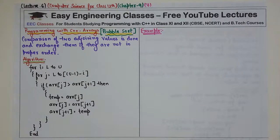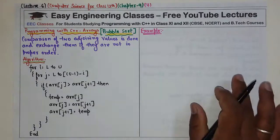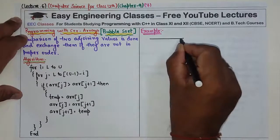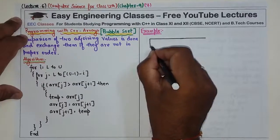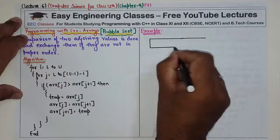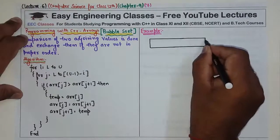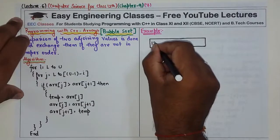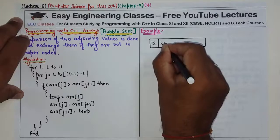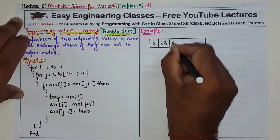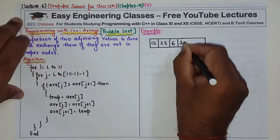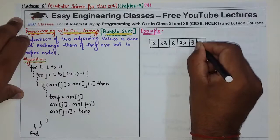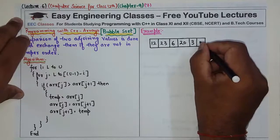Let's take an example. Suppose the array is like this: 12, 23, 6, 20, 3, and 18.